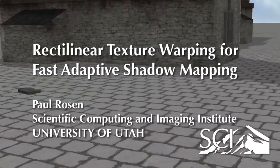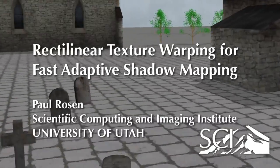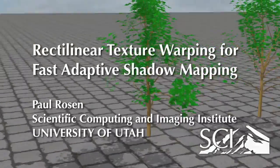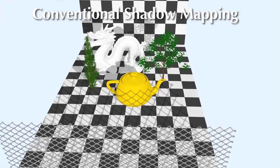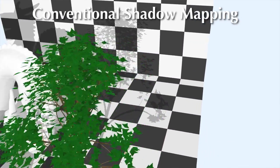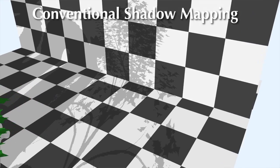Rectilinear Texture Warping for Fast Adaptive Shadow Mapping. Conventional shadow mapping uniformly samples 3D scenes, providing good quality shadow results at some distance away from objects. As the view approaches objects, aliasing artifacts caused by inadequate shadow map resolution appear in the shadow result.